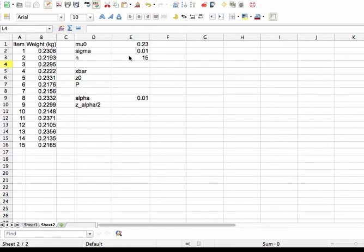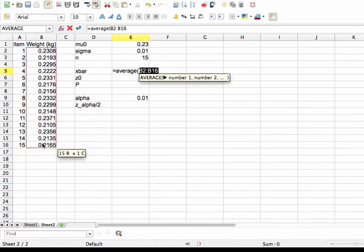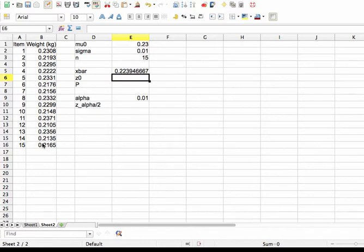And again we have 15 observations. So to compute the sample mean, we use the average function and average all of the weights to get 0.2239.